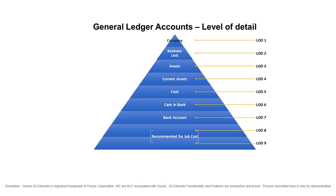Levels of Detail are JD Edwards' way of allowing great flexibility across different types of corporations all over the world without requiring them to have the same Chart of Accounts. That way, your Chart of Accounts matches the needs of your company. Level of Detail is used to summarize and classify accounts in the general ledger. You assign a Level of Detail to each account to control how amounts are rolled up or summarized into a balance for reporting purposes.